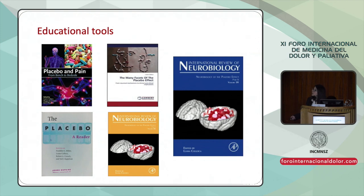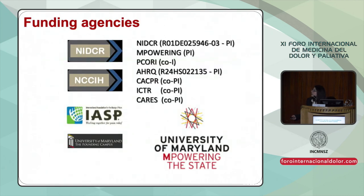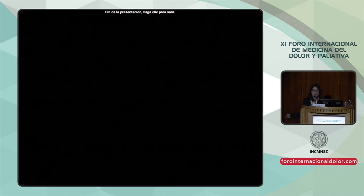Estas son algunas herramientas que les pueden gustar: libros que hemos estado produciendo en estos últimos años. Uno es un libro bastante completo acerca del placebo y dolor de animales a las éticas. Esta es una antología para conjuntar una colección de las contribuciones más importantes en bioética, biología y ciencias en cuanto a los ensayos clínicos aleatorios de placebo. Y los últimos dos cubren varios temas amplios acerca del placebo de forma mucho más generalizada en las diferentes áreas de medicina. Únicamente para conclusión me gustaría reconocer a todos los que han estado apoyando nuestros ensayos, y gracias a ustedes por su atención.